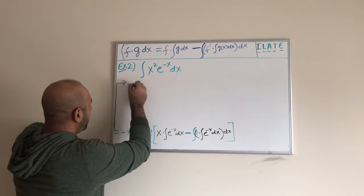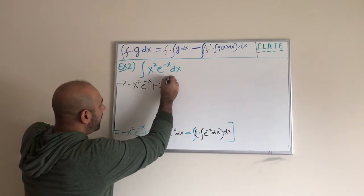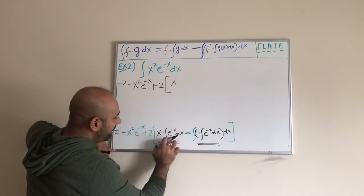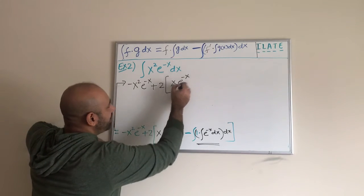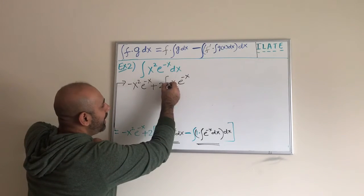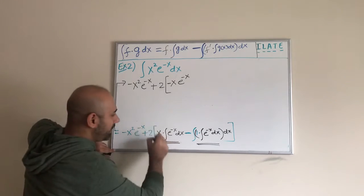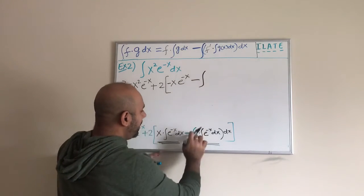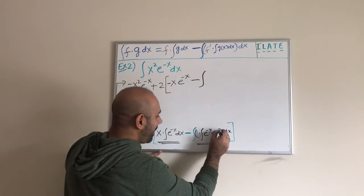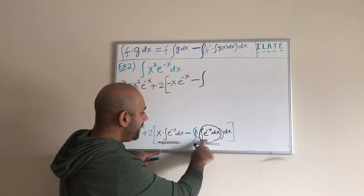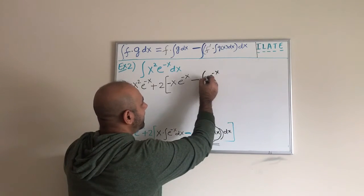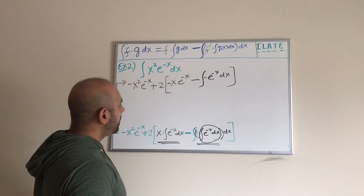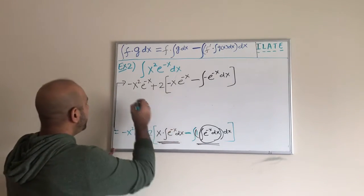Going back: this term stays as negative x squared e to the negative x, nothing changes there, plus 2. We still leave the 2 outside and simplify what's inside the brackets. The integral of e to the negative x is e to the negative x divided by negative 1, but I write the negative in front of x. Then for the other piece, we start from the inner integral — 1 times the integral of e to the negative x — and the integral of that is e to the negative x divided by negative 1, so I bring the negative upstairs.